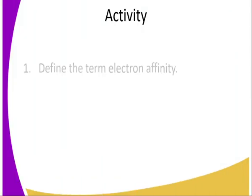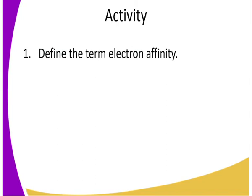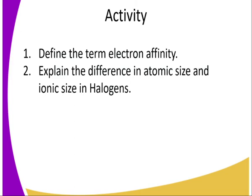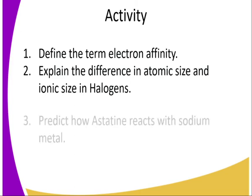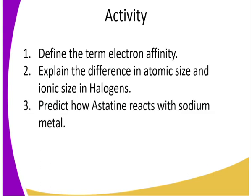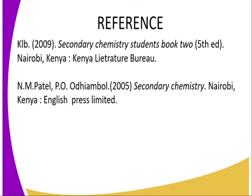For the activity of this lesson: Question one — define the term electron affinity. Question two — explain the difference in atomic size and ionic size in halogens. Question three — predict how astatine reacts with sodium metal, since it is a member of the halogens. You can refer to the Chemistry Students Book Two or Patel for reference.